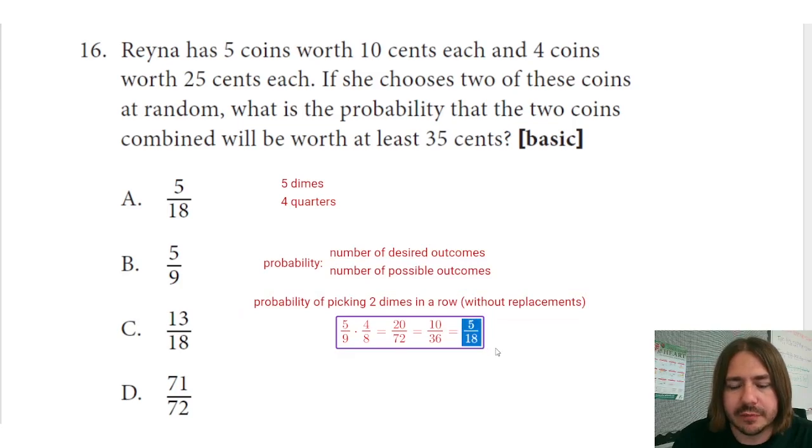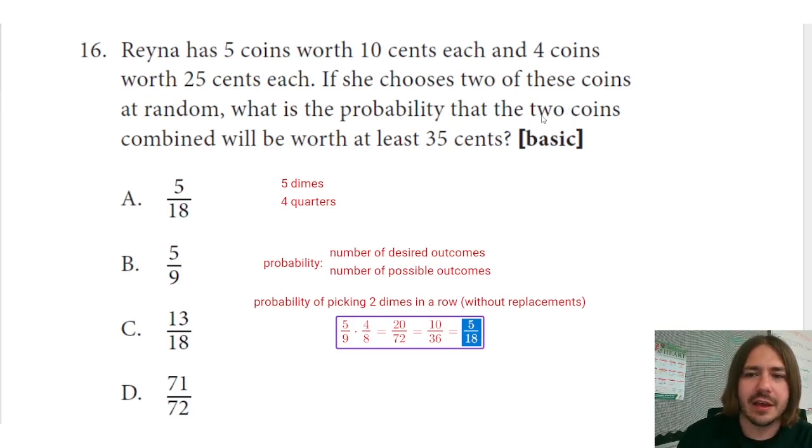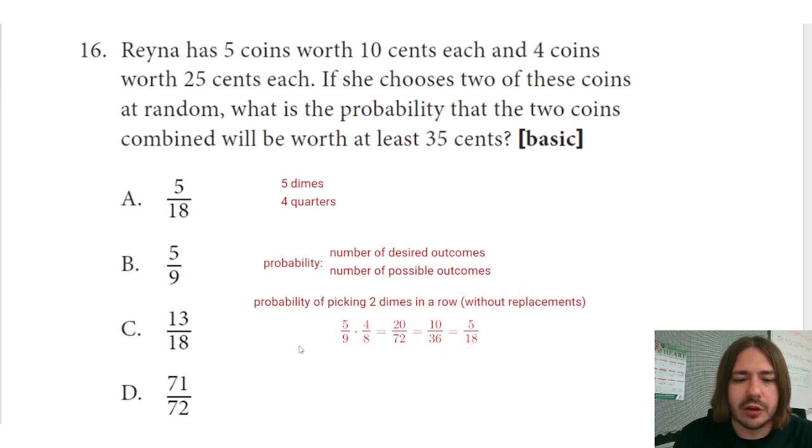Okay, so five eighteenths, and we can calculate that out of 100 percent, but really that's what we're looking for. So five out of 18 potential events are going to give us two dimes in a row. Now to figure out, well we want kind of the other side of that. The question here is asking what is the probability that you get at least 35 cents, and so that's going to be all the other possibilities. There's a total of 18 total possible outcomes here where five of them are going to be picking two dimes in a row.